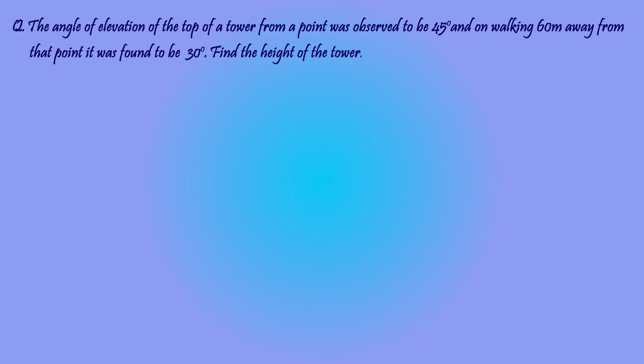Find the height of the tower. Let AB be the tower. From point C, the angle of elevation is 45 degrees. On walking 60 meters from point C, that is to point E, from that point E the angle of elevation to the top of the tower A is 30 degrees.